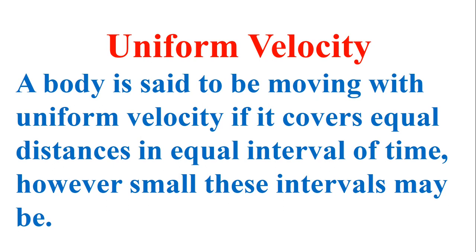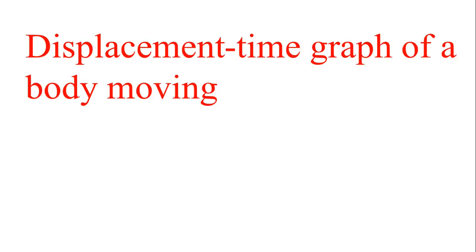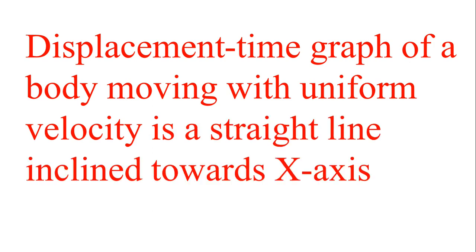Now, how can we represent uniform velocity graphically? Look at this graph. If the displacement of a body is 10 meters in the first one second, and again 10 meters in the second one second, and again 10 meters in another one second — every second the body covers equal displacement in equal intervals of time. When we join all these points, we get this type of graph. This is the graphical representation of a body moving with uniform velocity. We can conclude that the displacement time graph of a body moving with uniform velocity is a straight line inclined towards the X axis.